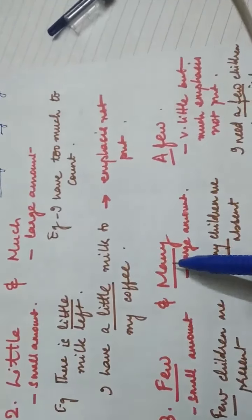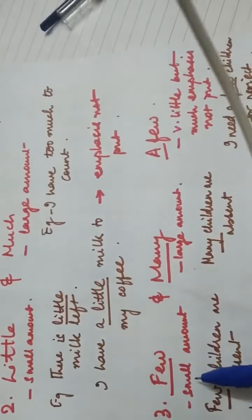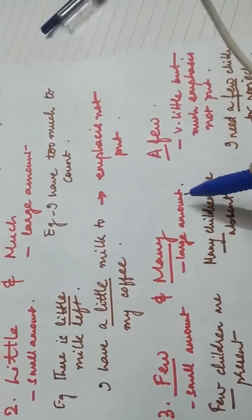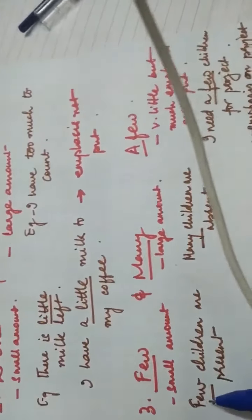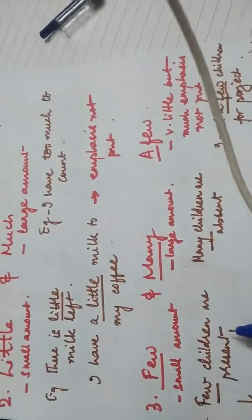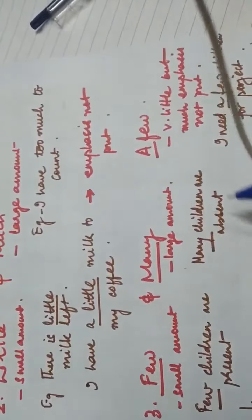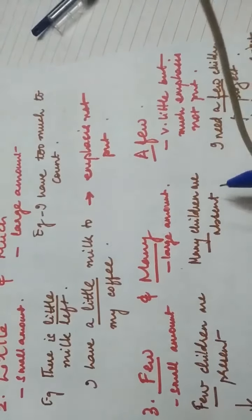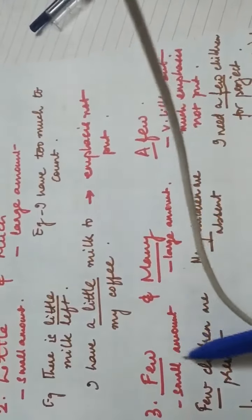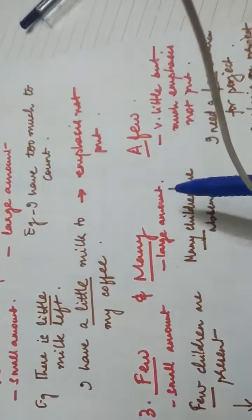Next are 'few', 'many', and 'a few'. 'Few' means a small amount and 'many' means a large amount. For example, 'few children are present in the park', and 'many children are absent in the class today'. 'Few' specifies a smaller quantity and 'many' specifies a larger quantity.